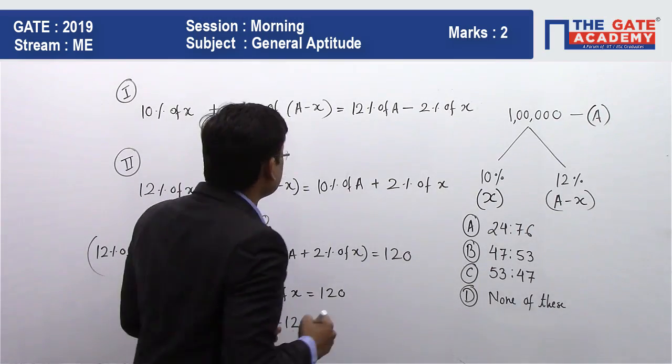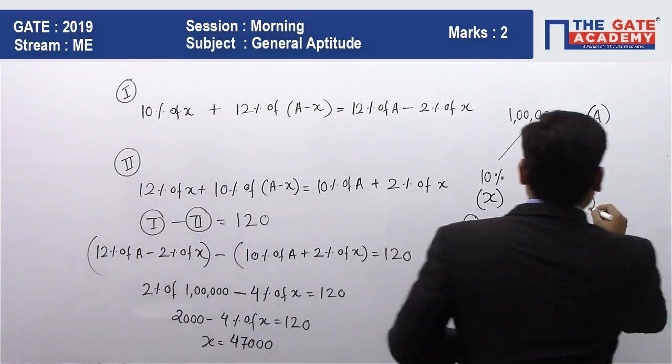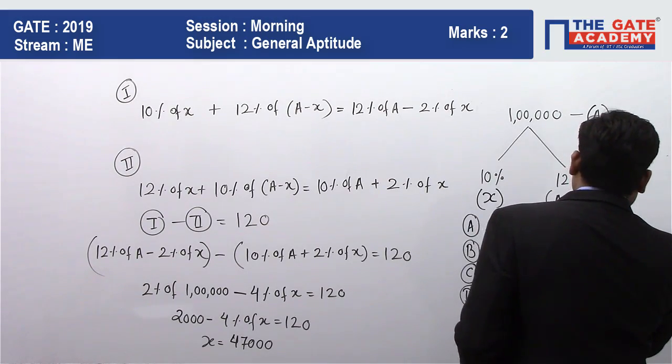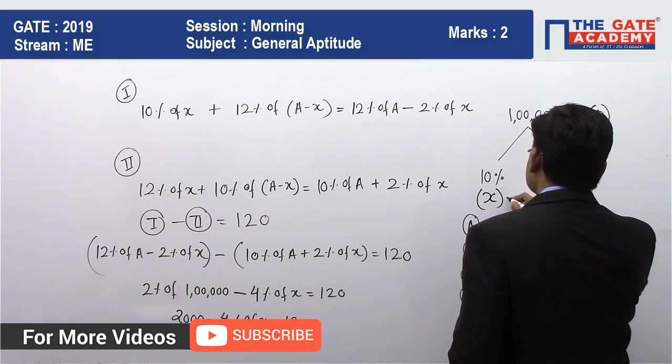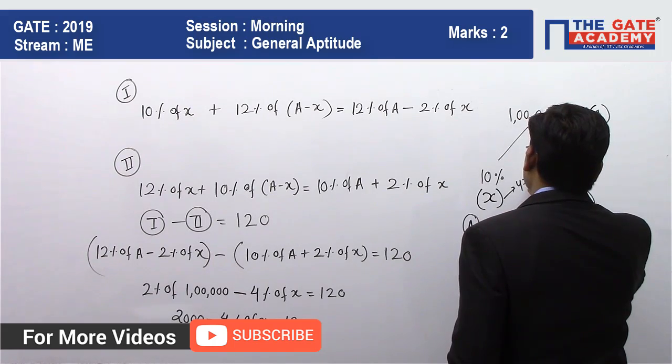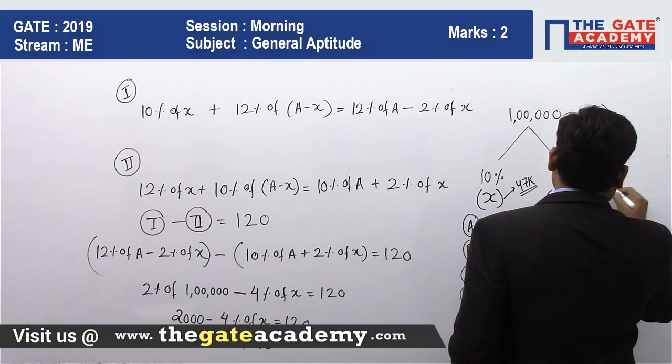So if my X value is 47,000, what will be my A minus X value? If my X value is 47k, this is 47k. So this will be 53.